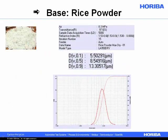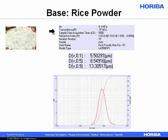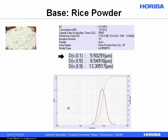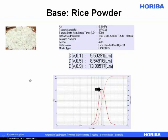I went online and bought some rice powder and measured it on the LA-950 at 3 bar. You can see the refractive index information and how we measured the sample, and then the points on the distribution: the D90, D50, and D10. 90% of the distribution is below the D90, 50% is below the D50 — the median value — and 10% are below the D10. The graphical representation shows a median near 8.5 microns. Very simple measurement — we could knock off three of these measurements in the course of one minute.